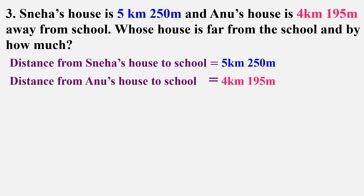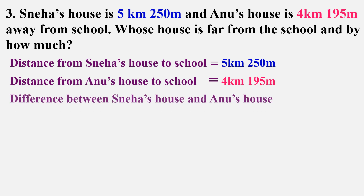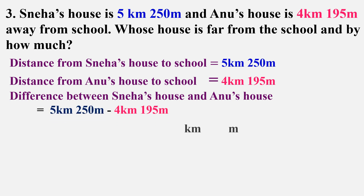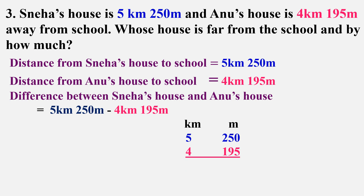Now for the second part of the question — whose house is far from the school and by how much? To find by how much, we have to find the difference: 5 kilometers 250 meters minus 4 kilometers 195 meters. We write kilometers and meters separately, put the minus sign, start subtracting from the right side, and you will get 1 kilometer 55 meters. So Sneha's house is farther by 1 kilometer 55 meters.